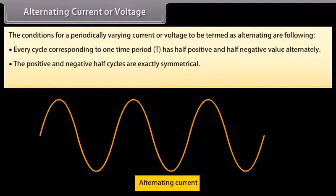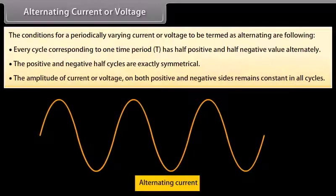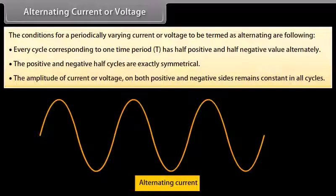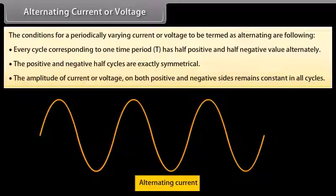The amplitude of current or voltage on both positive and negative sides remains constant in all cycles.